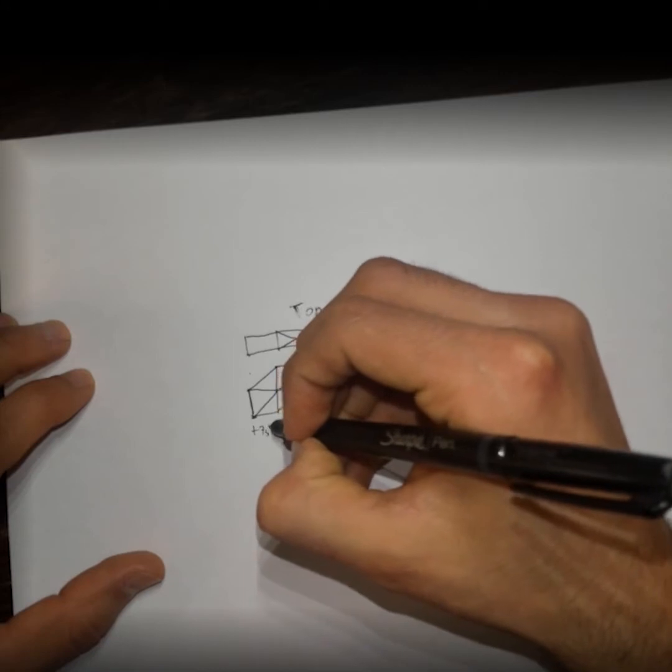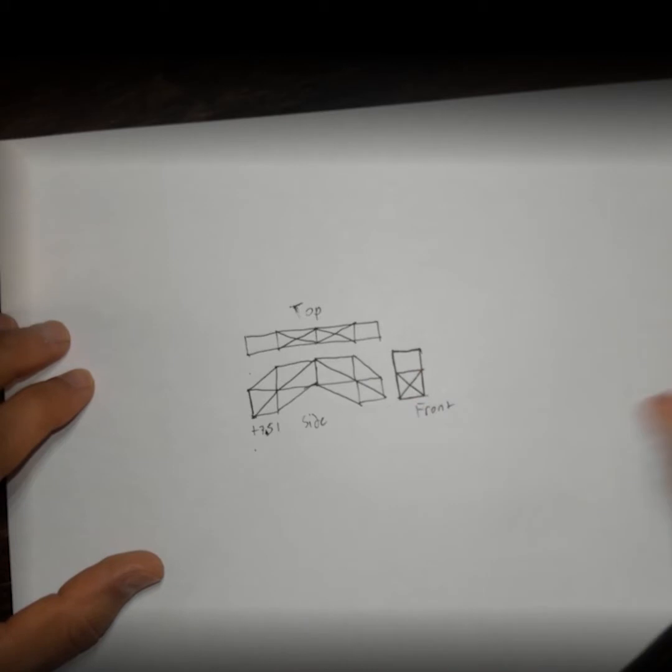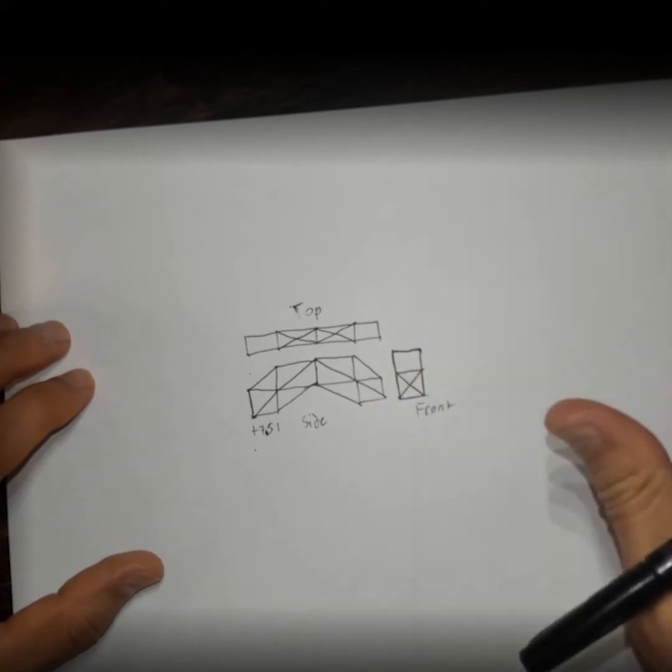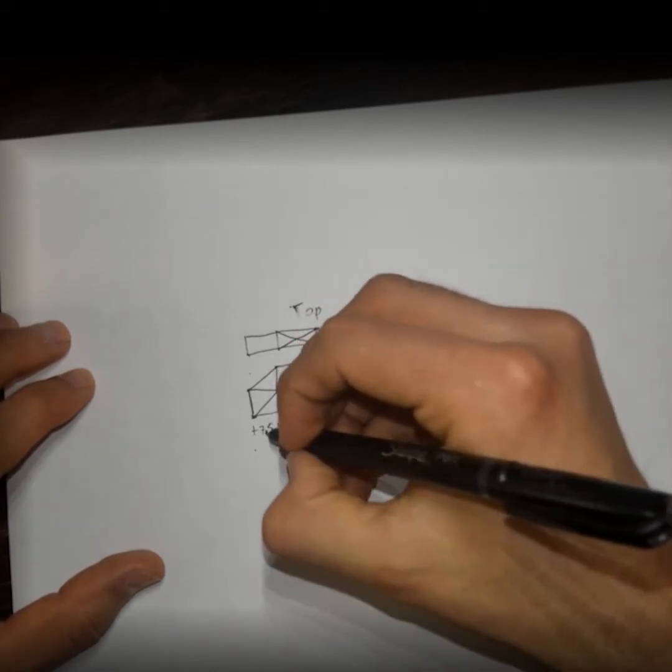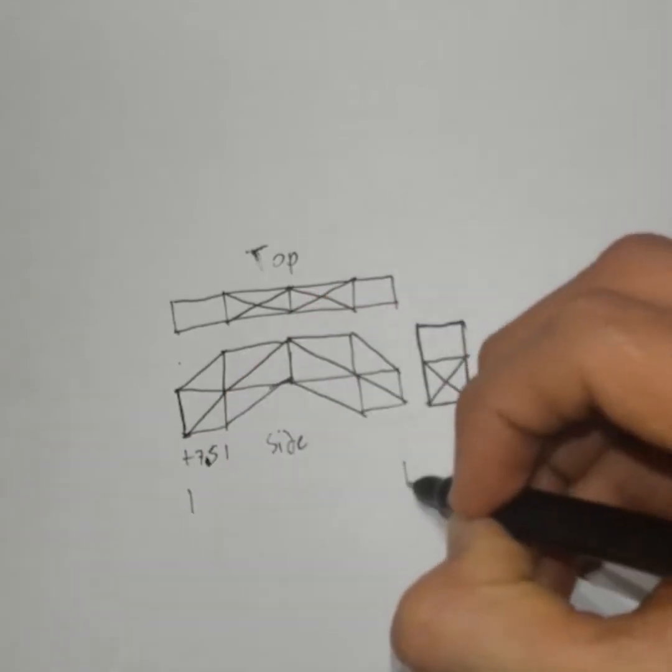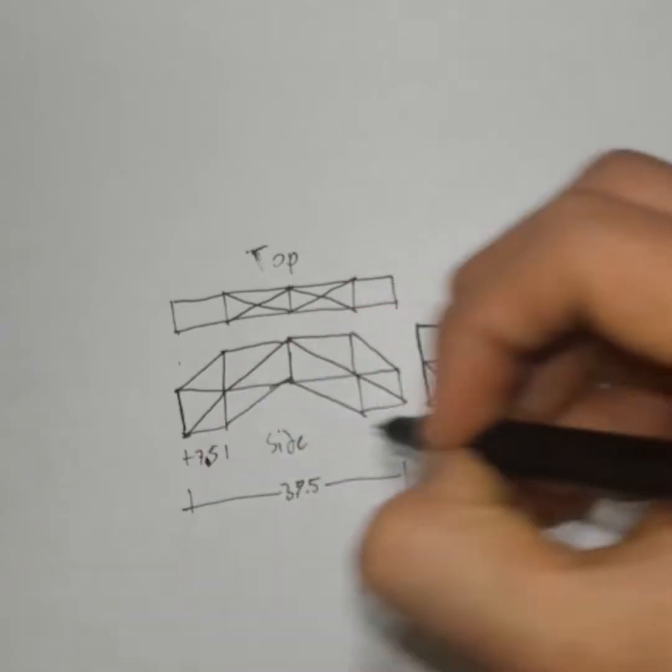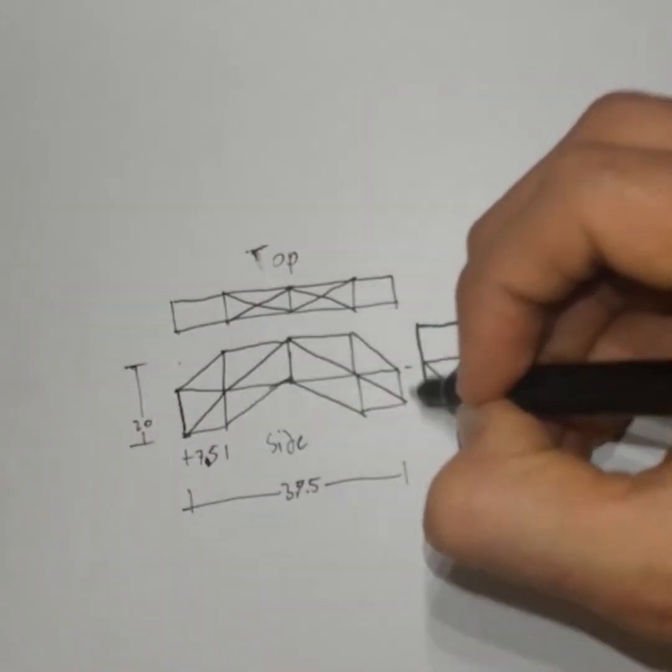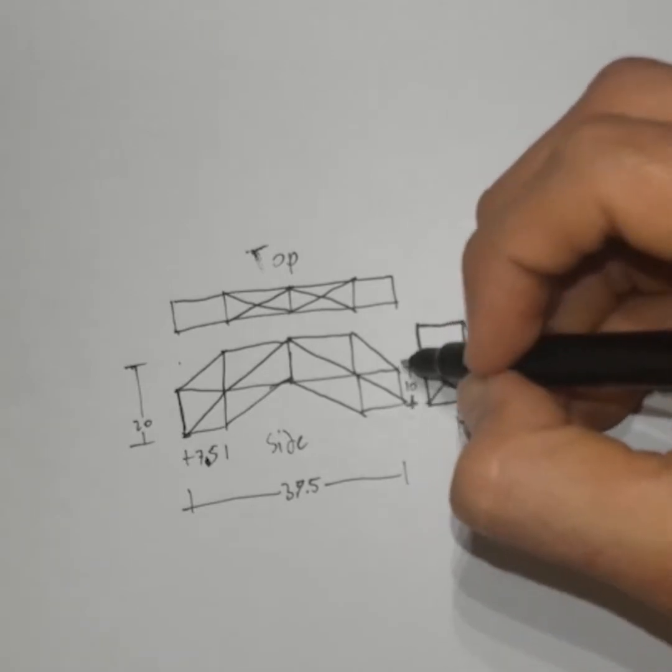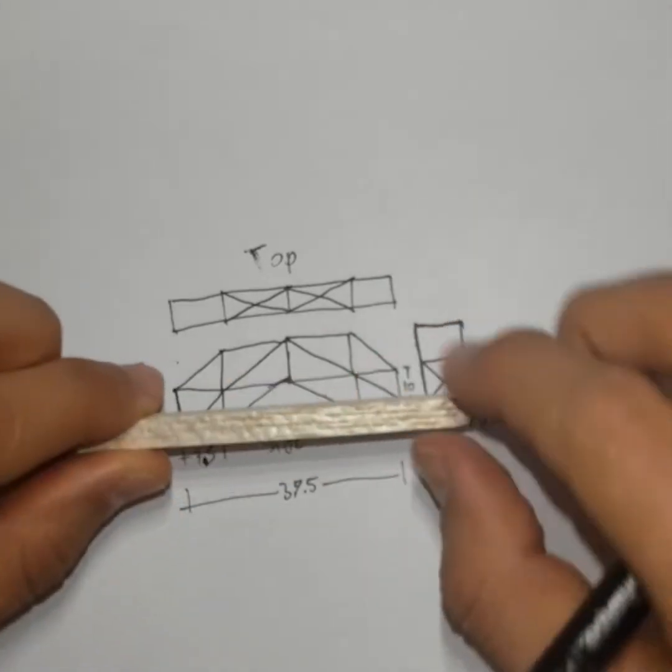So this leg will be 7.5 centimeters, and I don't need to write centimeters because I'm already going to mark up my other larger paper with centimeters. My overall length will be 39.5 centimeters. Alright, my overall height will be 20 centimeters, while my bottom section will be 10 centimeters tall, and my other section will be varying in height because of the thickness of our beams.